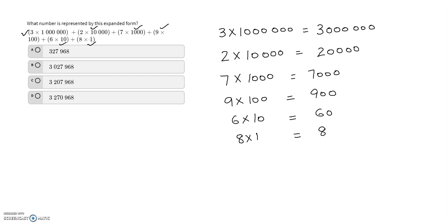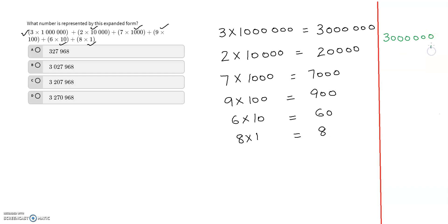I now have six numbers to add together. Before adding, I write them properly aligned from the right side: the first large number, then 20,000 aligned with its zeros from the right, then 7,000, 900, 60, and 8 — all aligned carefully on the right side.